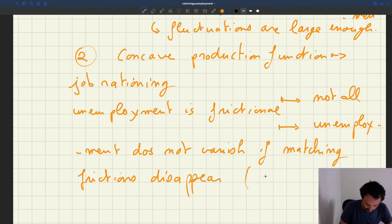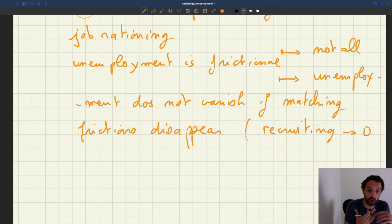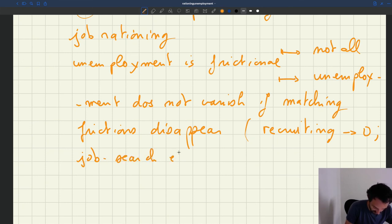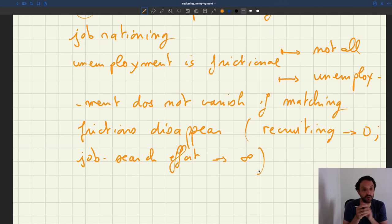Even if recruiting costs go to zero, there will still be some unemployment in the model. That's just because sometimes firms just don't want to hire all the workers that are looking for jobs. Similarly, if the effort that job seekers put into their job search goes to infinity, which usually means that matching frictions is not an issue, again, not all unemployment is going to disappear.